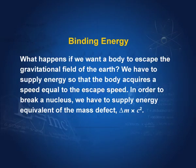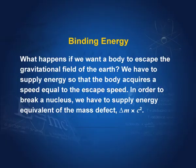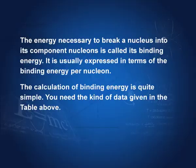What happens if we want a body to escape the gravitational field of the Earth? We need to supply energy so that it acquires escape velocity. Similarly, if we want to break a nucleus, we have to supply energy equal to the binding energy, that is Δm times c². This energy necessary to break the nucleus is called its binding energy, and it is usually expressed in terms of binding energy per nucleon.